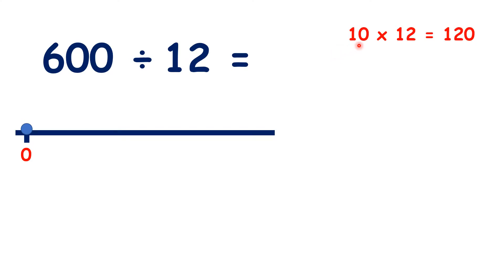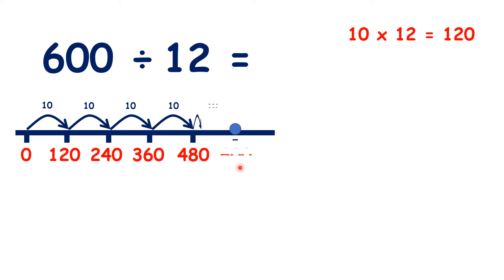But we do know that 10 times 12 is 120, so if we count up in steps of 10 times 12, we have 120, 240, 360, 480, and 600.